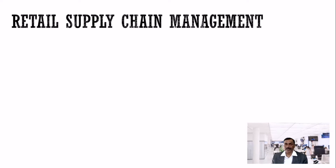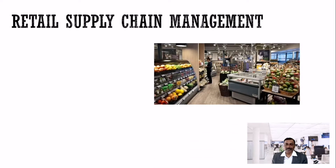There is one more important topic in supply chain management called retail supply chain management. It is slightly different from manufacturing supply chain. As we have seen earlier, the power has shifted from manufacturing to retailer. In retail supply chain management, the priority is changing — retailers need you to provide items so that they do not stock out. When the customer wants a particular item, it should be available on the shelf.